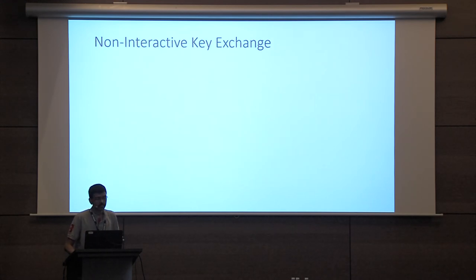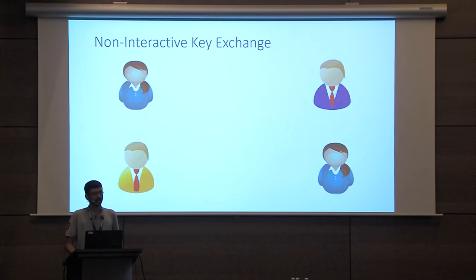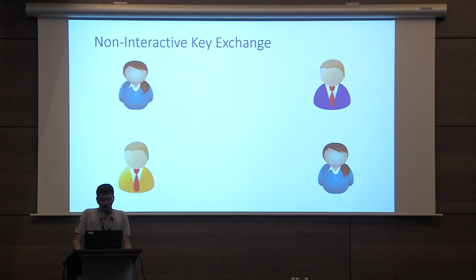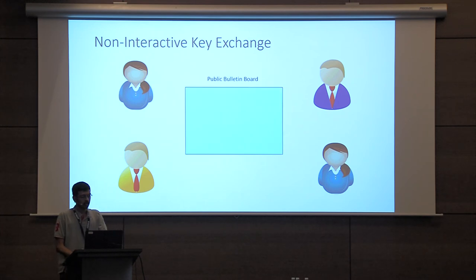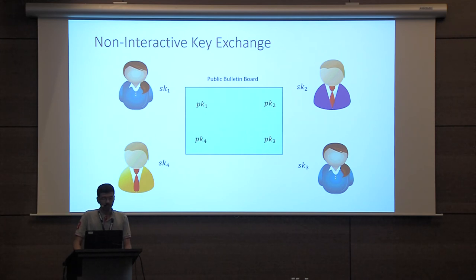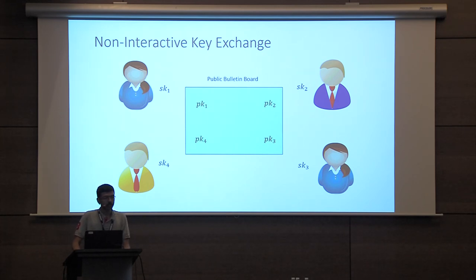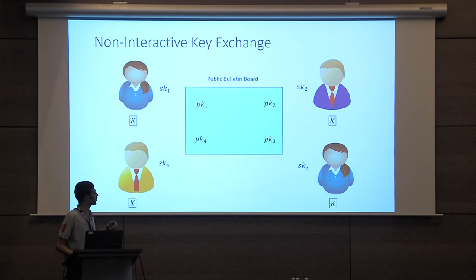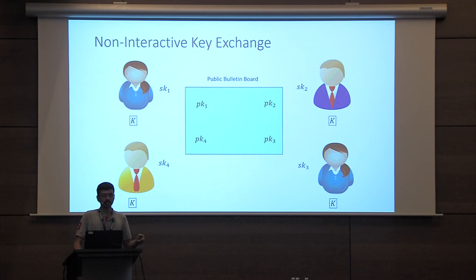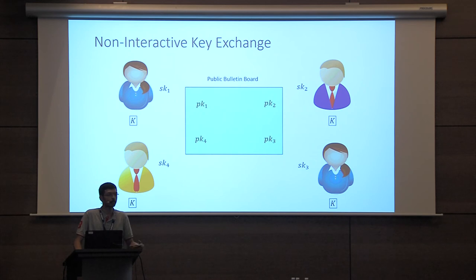Let us see how to use this technique to build non-interactive key exchange. In a non-interactive key exchange protocol, several parties wish to derive a shared key. There is a public bulletin board where the parties publish some public information while retaining some secret information. The key derivation algorithm takes all the published information along with a party's secret information and derives a shared key. The correctness guarantee is that the key derived by every party is the same, and the security guarantee is that given just the public information, the shared key is indistinguishable from a random string.